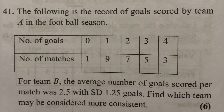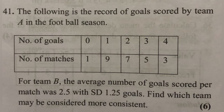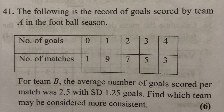This question is about the record of goals scored by Team A in a football season — the number of goals and the number of matches are given as discrete frequency data. For Team B, the average number of goals scored per match was 2.5 and the standard deviation is 1.25 goals. We find which team is more consistent using the coefficient of variation.